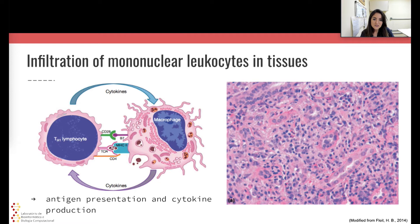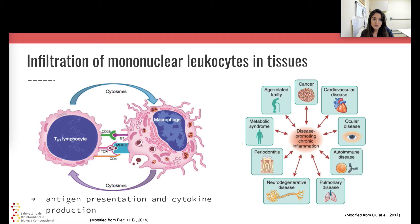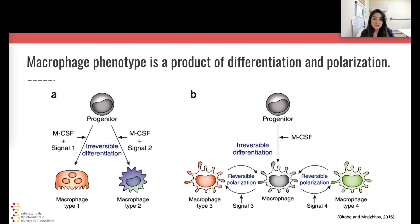Macrophages are also associated with an aberrant and persistent inflammatory response, and in this case it can lead to tissue degeneration and a variety of diseases such as cancer and metabolic syndromes. To exert this vast range of functions, they must present different phenotypes, which are mostly a combination of differentiation and polarization programs. The polarized phenotypes are induced by signals leading to a stable phenotypic change through the induction of different gene expression programs.